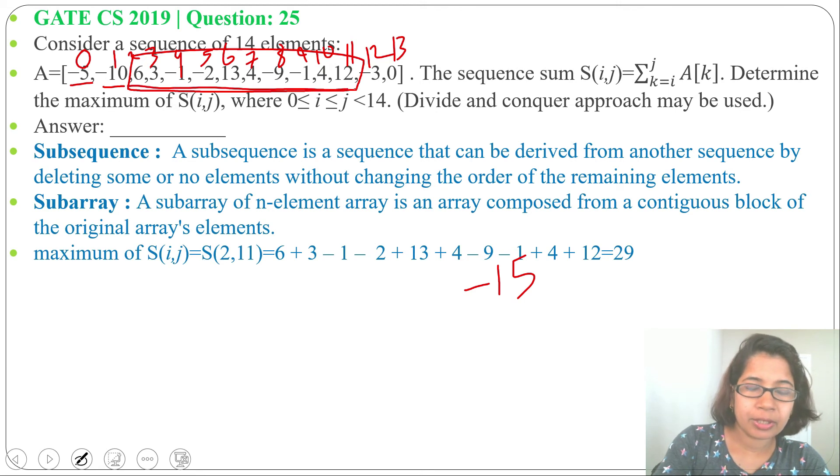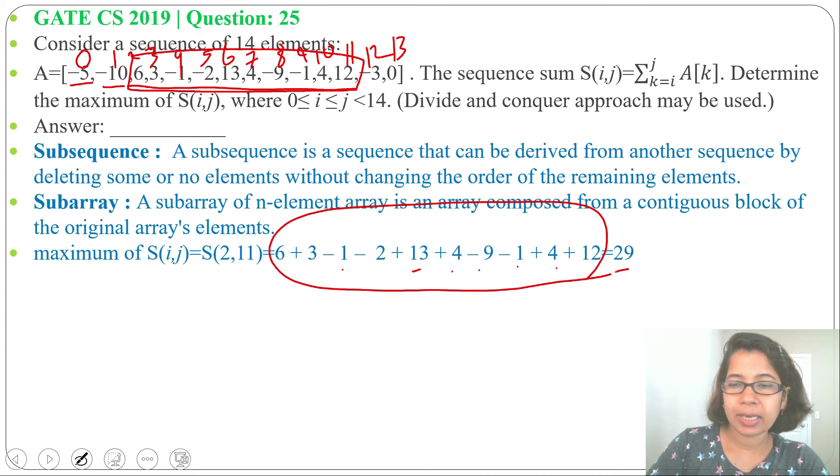So we'll do this much summation starting from 6 till 12. So 6 plus 3 minus 1 minus 2 plus 13 plus 4 minus 9 minus 1 plus 4 plus 12. So this sum is 29 and that is the maximum.